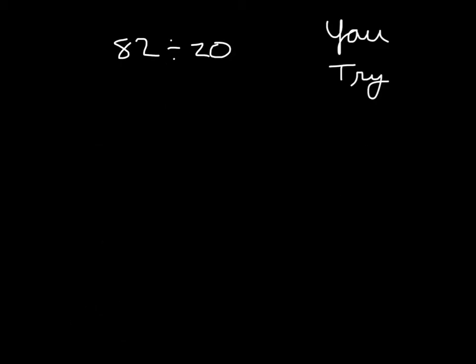It's time for you to try, use the standard algorithm and check. Did you set up the problem correctly? 20 goes into 82 4 whole times. 4 times 20 is 80. 82 minus 80 is 2. So our remainder is 2.